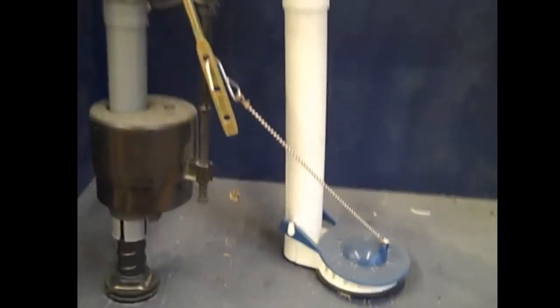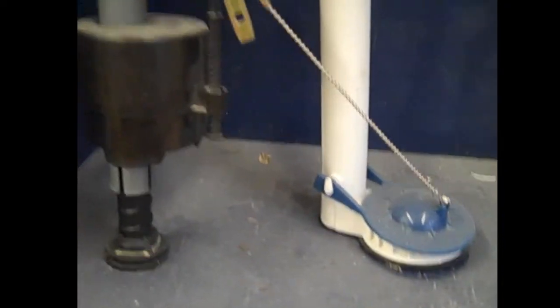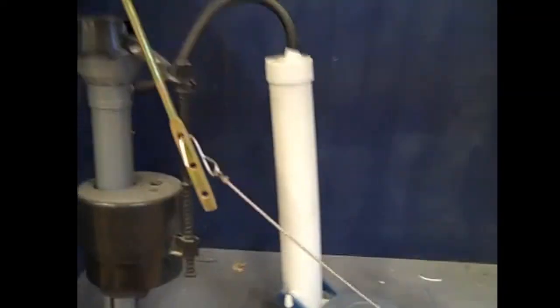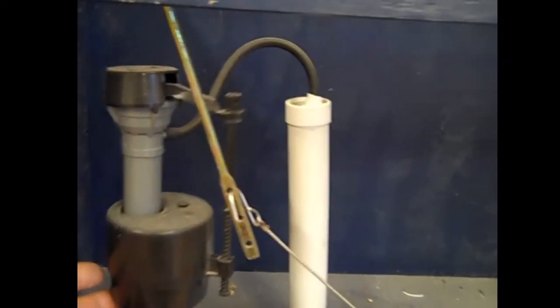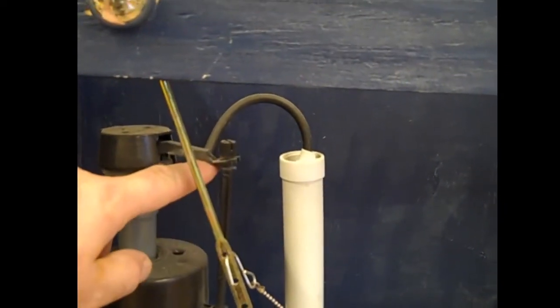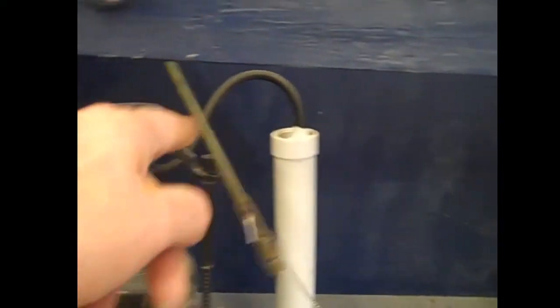Now the way a toilet operates is you have the tank and the tank fills full of water. When it fills full of water the float here rises up. This part here is actually a valve that shuts the water on and off. The water is coming in from underneath this pipe. It comes up through this pipe and over through here and out through the bottom here and fills up the tank.